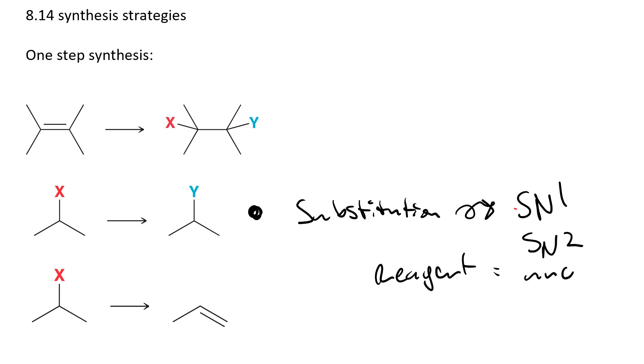Your reagent is a nucleophile, and your substrate is an alkyl halide or something with a good leaving group. If you have an alcohol, you can treat it with tosyl chloride or use a halo acid to make it into an alkyl halide.